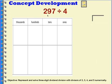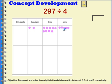First we're going to divide 297 into four groups, so 297 divided by 4. I can represent 297 on my place value chart. I have two hundreds, I have nine tens, and I have seven ones. Then I can look at the hundreds and attempt to divide the hundreds into my four groups, but I only have two hundreds.